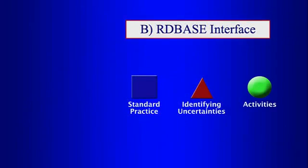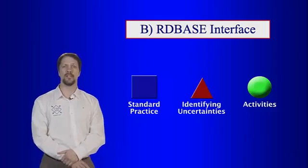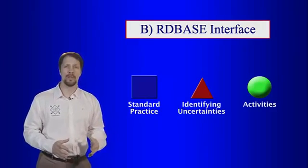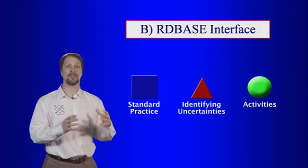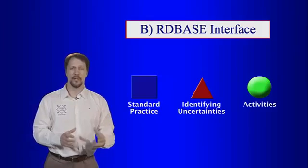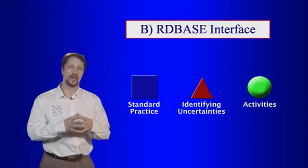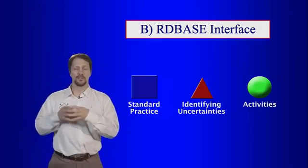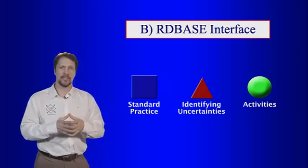The R&D Base interface has three main components. The first is a definition of the standard practice, represented by the square. We then want to show we're thinking outside the box with our objectives by identifying the variables of uncertainty, or the triangle. Lastly, our circle icon represents the activities themselves.